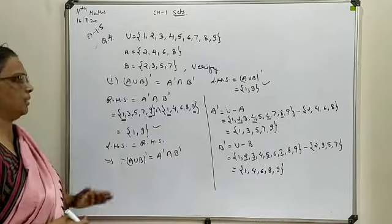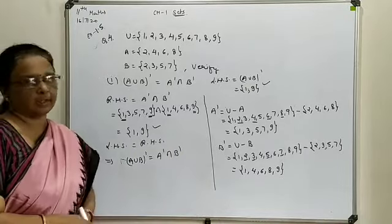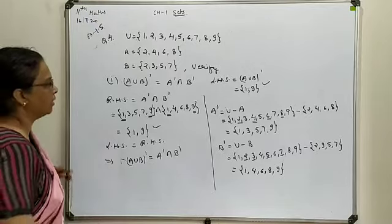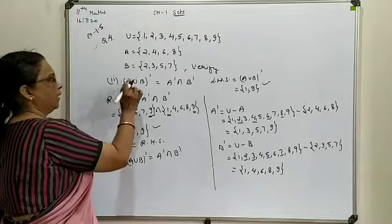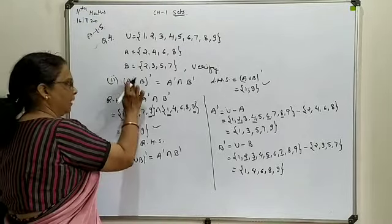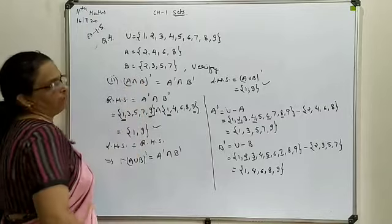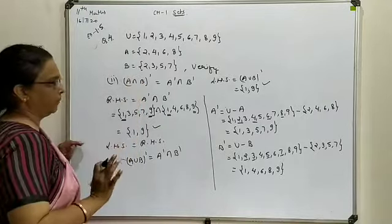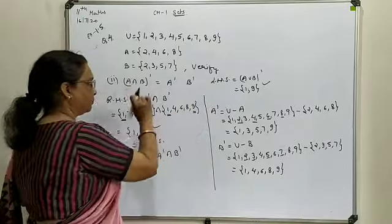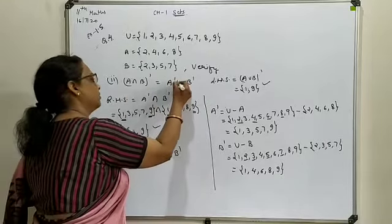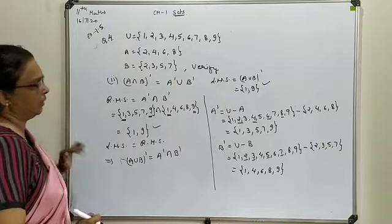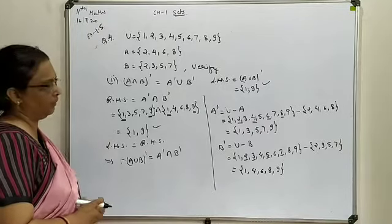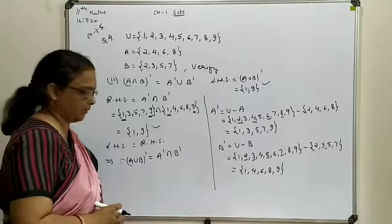The same way you can proceed for the second part, in which only one change is there: in place of union, you have to check for the intersection case, meaning (A ∩ B)' = A' ∪ B'. Both will give you the same answer, so the second part can be attended similarly.